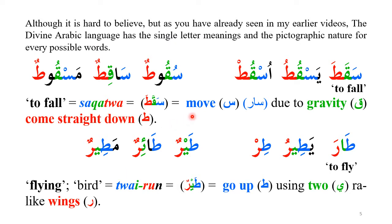It is difficult to believe, but I have shown that every letter has a picture built in. In my last video I discussed the letter Ta: when it is the first letter, as in 'taara' (to fly), it means to go up; when it is the last letter, as in 'sakata' (to fall), it means to come down. You can see the object shape with the Qaf falling due to gravity. In 'taara,' the alif is in an upward direction and Ra uses spread wings, so Ta-Ra relates to flying.